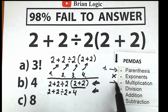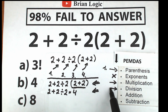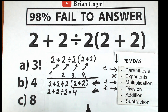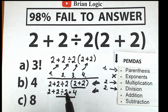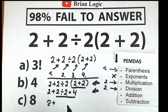According to PEMDAS, multiplication and division have the same priority. The key rule is: scan from left to right and perform whichever operation appears first. Looking at our expression, the first sign from left to right is the division sign. So we do 2 divided by 2 first, which equals 1. Now we have: 2 plus 1 times 4.